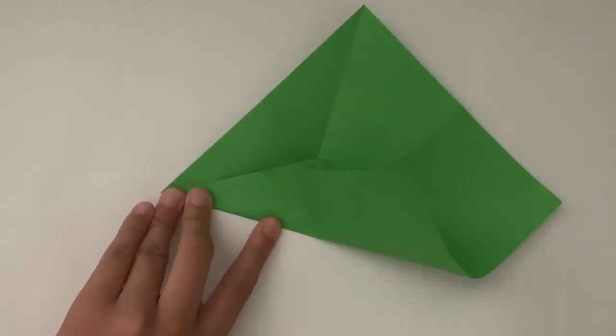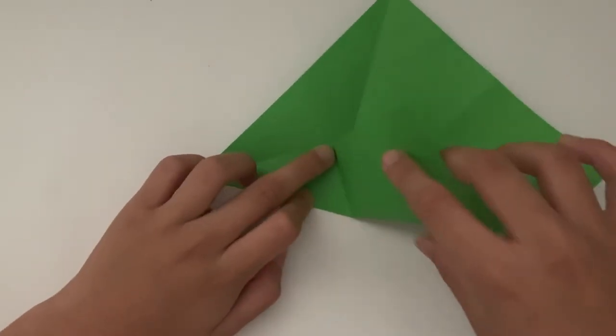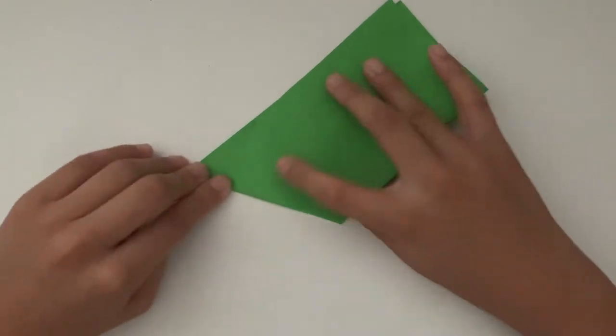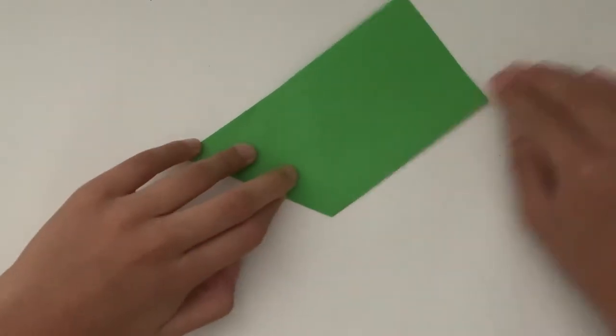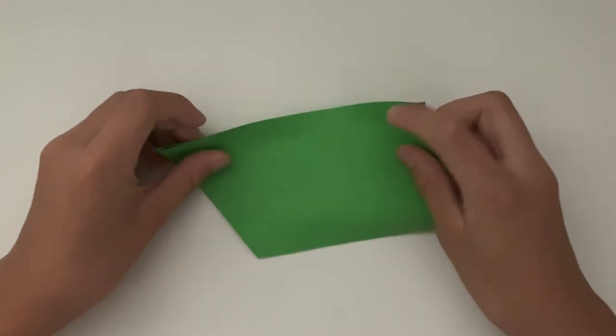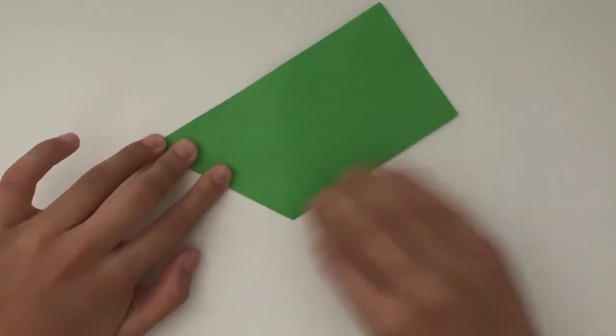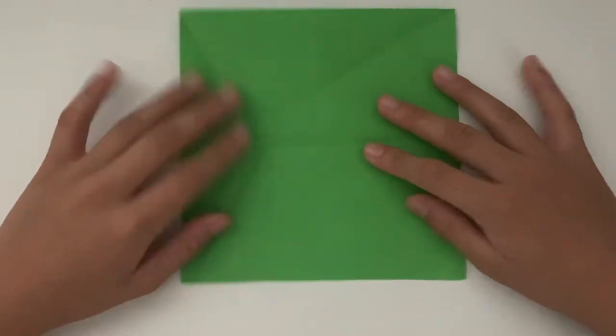So then we're going to crease along this spot. Bring it over right on top so then it's like that. Boom. Now I'm going to unfold, do it again.